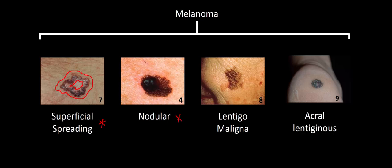The next subtype is nodular melanoma — the melanoma used in the histological-clinical correlation earlier. It looks exactly as it sounds: a raised pigmented area resembling a nodule. Unfortunately, nodular melanoma often carries a worse prognosis than superficial spreading melanoma due to an early vertical growth phase of atypical melanocytes into the underlying dermis. The third subtype is lentigo maligna melanoma, which often appears as pigmented macules, typically in the elderly. If caught early, it can have a good prognosis because, like superficial spreading melanoma, it also has an early horizontal growth phase.